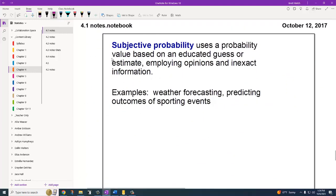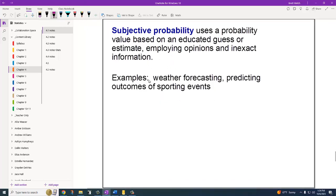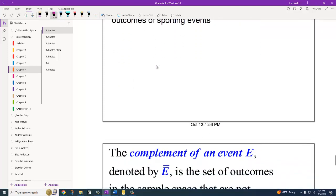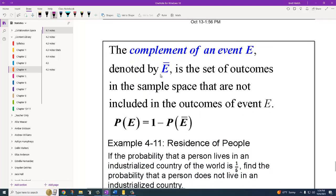A subjective probability, remember, is when we're using educated guesses to estimate and using opinions and things like that and inexact information. So weather forecasting, predicting weather or sporting outcomes, things like that are all examples of subjective.